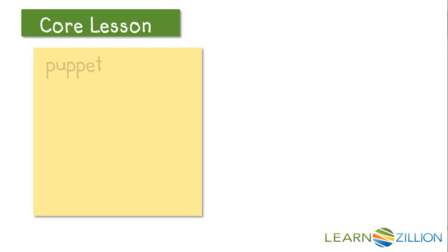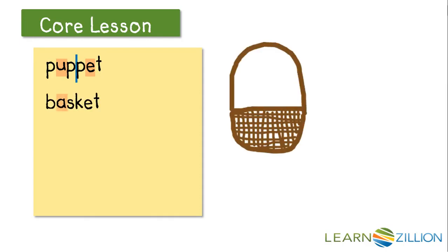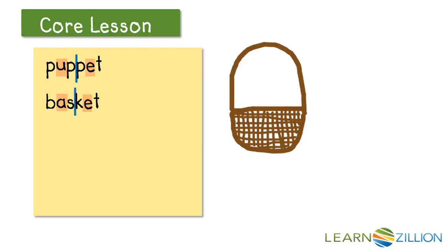Let's look at a few more examples. Find those vowels — they're followed by consonants, so we'll try splitting it right in the middle: puppet. That works. Let's look at another example. Are the vowels followed by consonants? Yes, an S and a T. So let's try splitting it after that first consonant and say it with short vowel sounds: bas-ket.